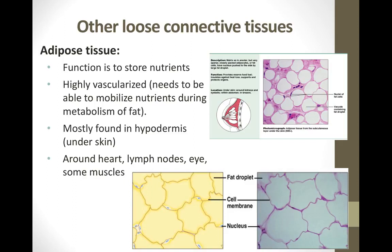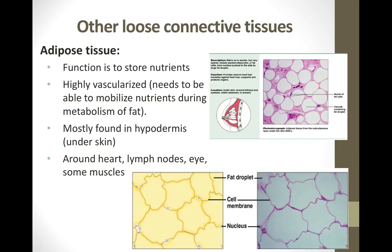The second type of loose connective tissue is adipose tissue, which contains a significant amount of fat. These cells have very limited organelles — the most pronounced is the nucleus, visible on the sides of the cell — while the majority of the space is taken over by fat. These tissues are highly vascularized because stored energy needs to be easily accessed. Adipose tissue can be found around the heart, in your lymph nodes, and around the eye muscles.